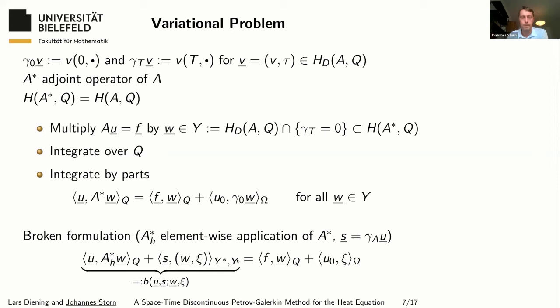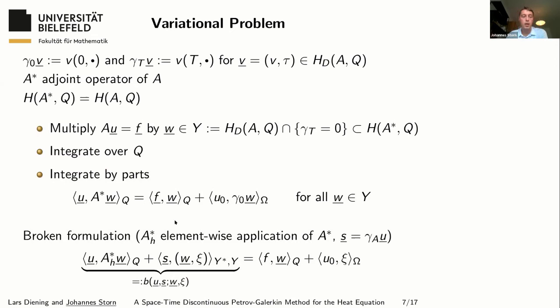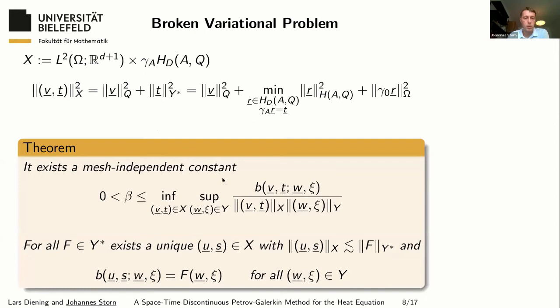The last step is to replace this trace by a new unknown s, which leads to a bilinear form and gives some right-hand side. Indeed, it leads to a well-posed variational problem: the inf-sup condition is satisfied, and for any right-hand side in the dual of Y there exists a solution which depends continuously on the right-hand side and solves this variational problem.